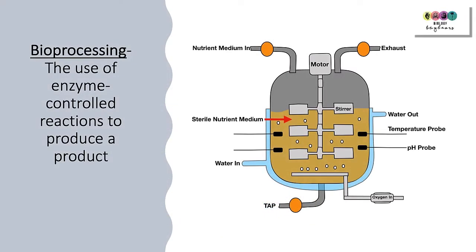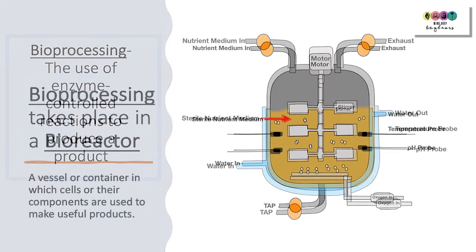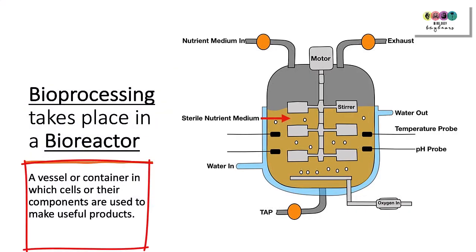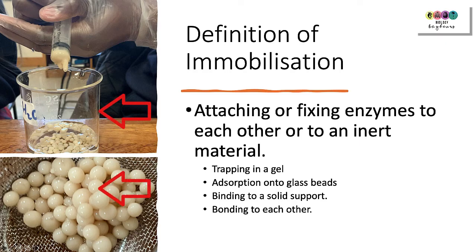At the end of the enzyme chapter, you look at bioprocessing — the use of enzyme-controlled reactions to produce a product. Bioprocessing takes place in vessels known as bioreactors. A bioreactor is a vessel or container in which cells or their components are used to make useful products. Immobilized enzymes are often used in bioprocessing. Immobilization means attaching or fixing enzymes to each other or to an inert material. In the lab, we trapped enzymes in sodium alginate gel, though other methods include absorption onto glass beads, binding to solid supports, or bonding to each other.